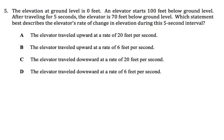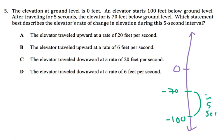Alright, this is one of those careful reading problems, which is just hard to figure out what it's asking. The elevation at ground level is 0 feet, which we already know. 0 feet is like sea level. An elevator starts 100 feet below ground level. So that's like down here. After traveling for 5 seconds, the elevator is 70 feet below ground level. So that means it goes from here to here in 5 seconds. It might be useful to figure out how far apart that is. If it started at negative 100 and went up 70, it looks like it went 30 feet. So it went 30 feet in 5 seconds.